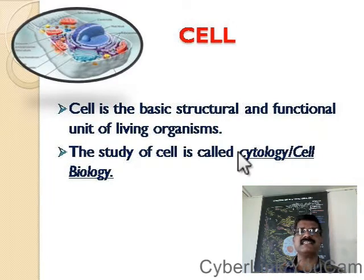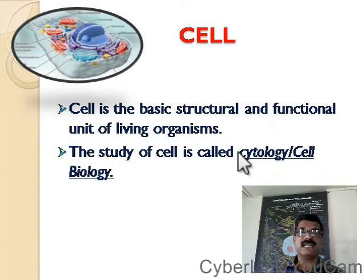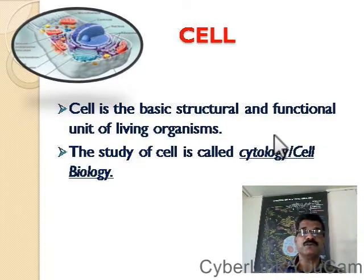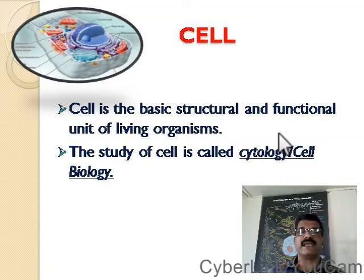Cell is the basic structure. Many cells join together to form tissues, different tissues form the organs, different organs together form the organ system, and the combination of different organ systems gives rise to an organism. So basically, every organism is made up of cells.